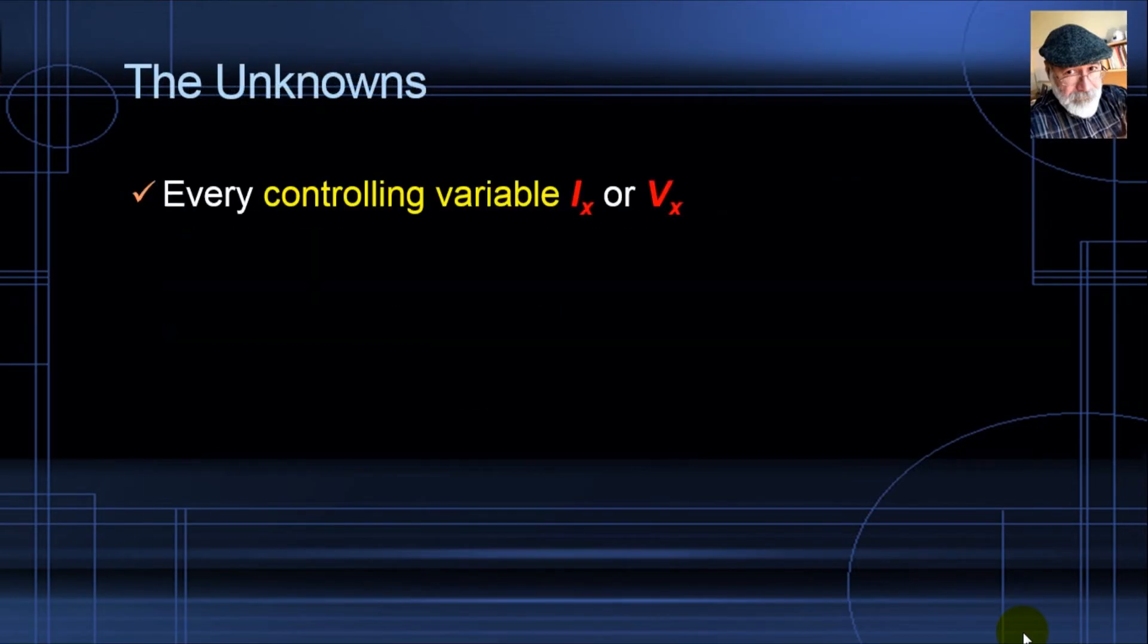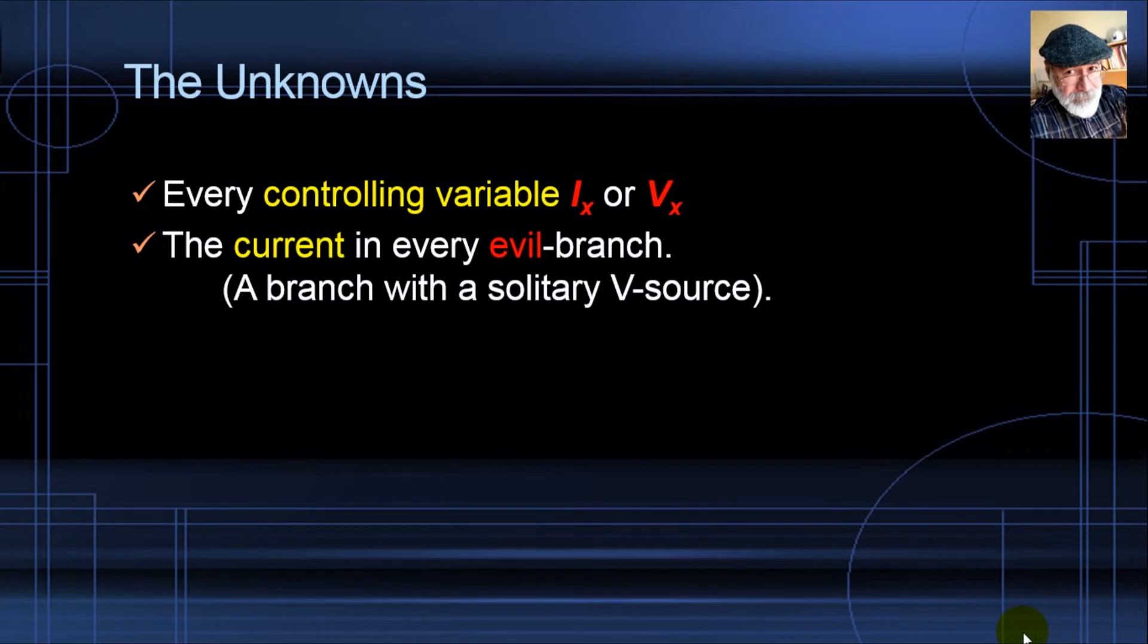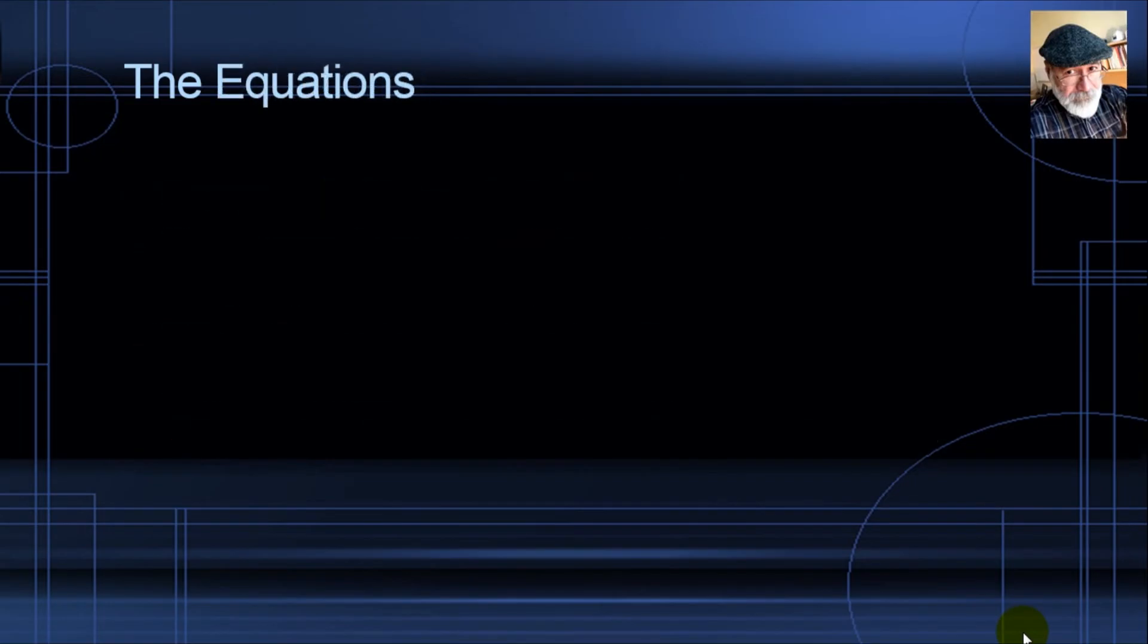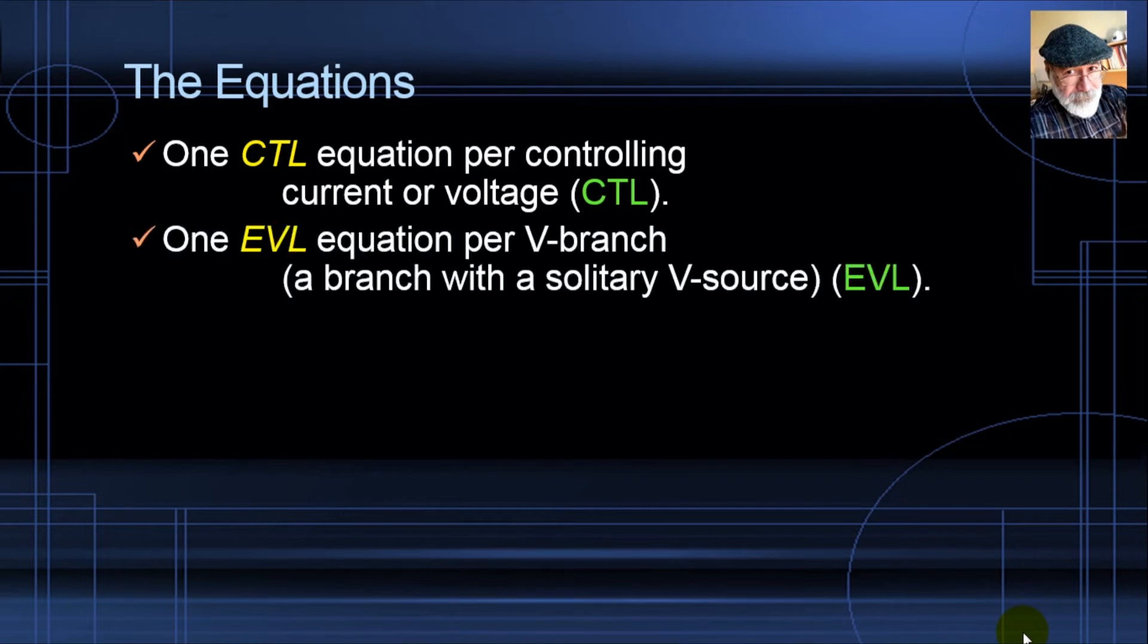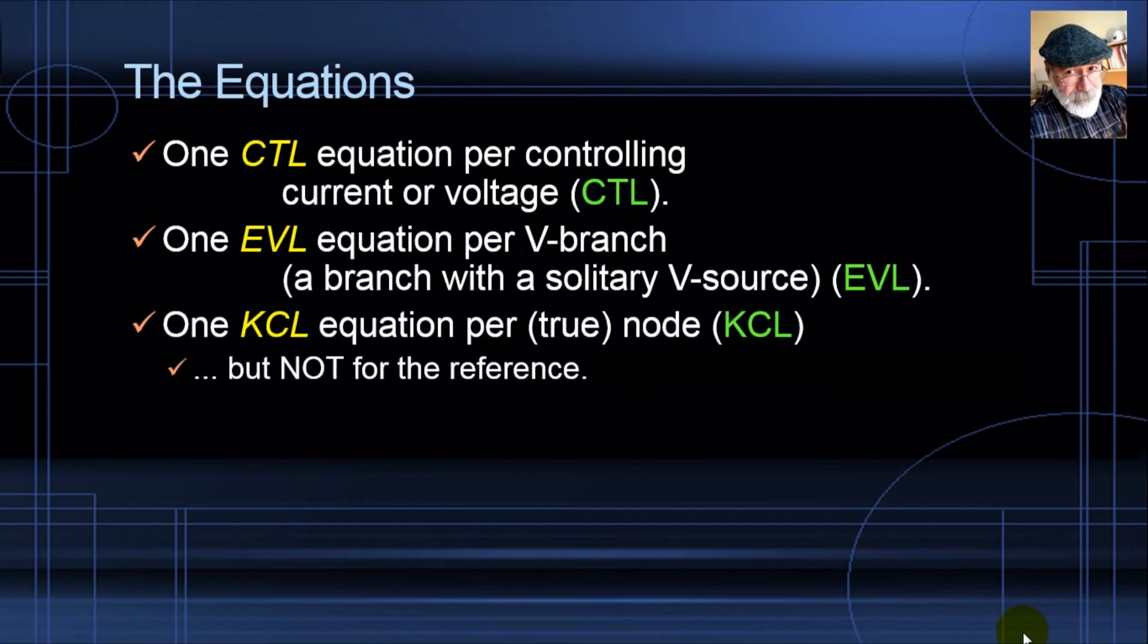And what are the unknowns we need to solve for? Every controlling variable is an unknown. We're going to need an equation for each one. Every evil current is an unknown. Every node voltage is an unknown. We will need equations to solve for all of those unknowns, one per unknown.